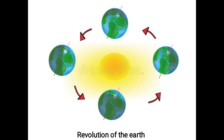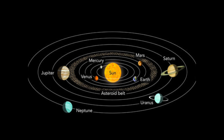In this way, earth revolves around the sun. Besides earth, there are seven other planets that also revolve around the sun.